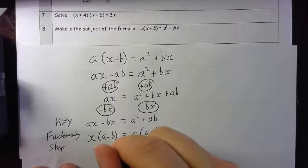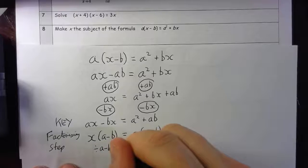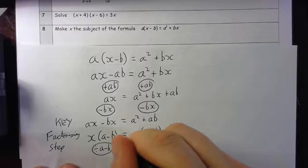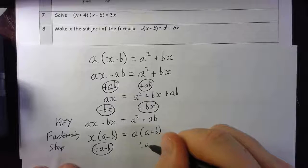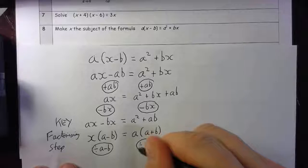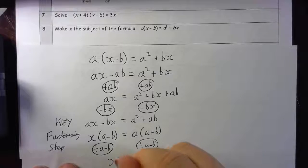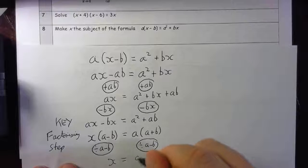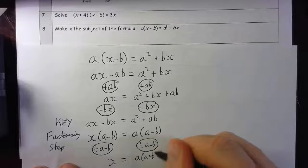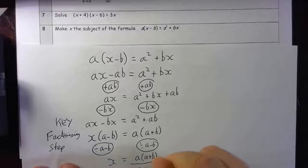So if I now divide by (a-b) and divide by (a-b) from both sides, I've got x equals a(a+b) over (a-b).